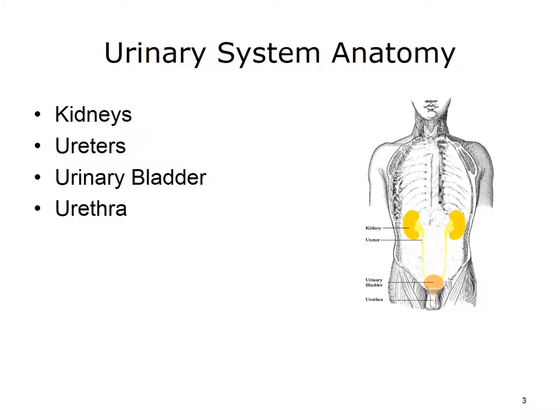Let's start our study of the urinary system with a look at the relevant anatomy. As you probably know, the primary function of the urinary system is to maintain the volume and levels of body fluids within normal limits. It does this in part by excreting waste. The urinary system, illustrated in the diagram, consists of two kidneys, two ureters, the urinary bladder, and the urethra.